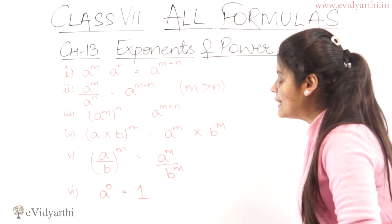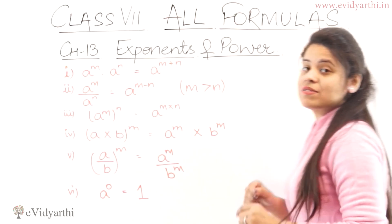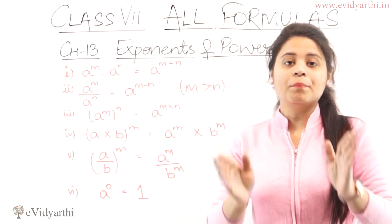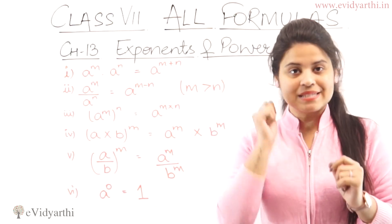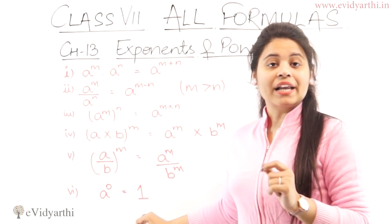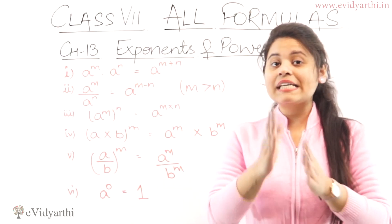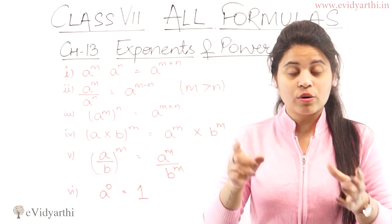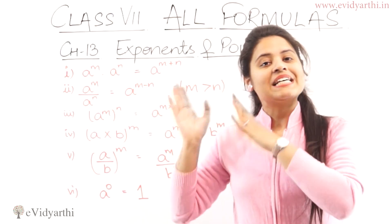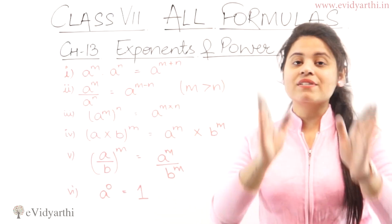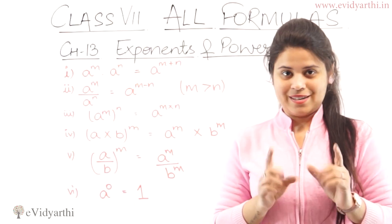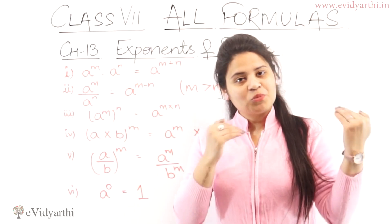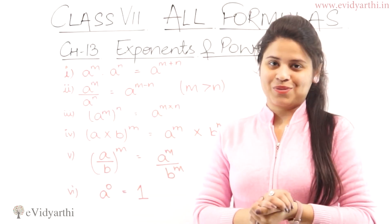Then the last law is a raised to the power 0 equals 1. This means any number raised to the power zero equals 1. So these are my last chapters and best formulas. Now I will move aside and you can note them down.